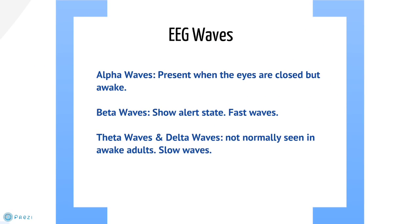Around 20 or more electrodes are placed on the head using the International 10-20 electrode placement system as a basis. An EEG will produce an individual trace for each electrode placed. The normal electrical wave traces produced by an EEG include alpha, beta, theta and delta waves. Different stimuli will produce different wave traces from different brain areas. For example, alpha waves should be detected at the back of the head while awake with your eyes shut.